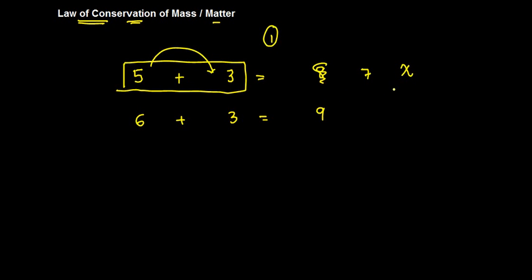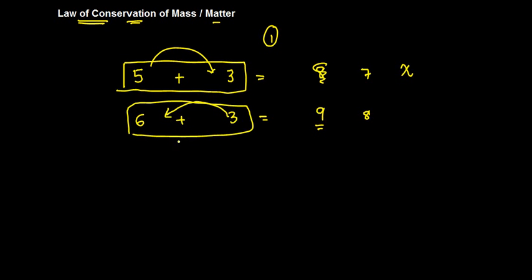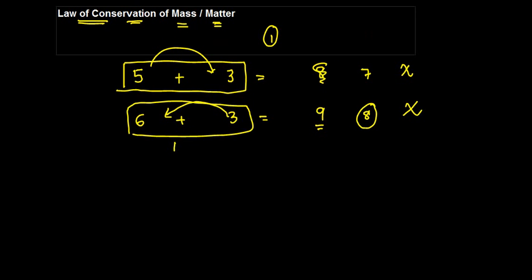That is incorrect. When you add 5 and 3 you get 8. Similarly, when you add 6 and 3 you will always get 9. You cannot get 8 by saying that while I was adding 3 with 6 there was a loss of 1 and therefore what I have reached is 8 — that is incorrect. The law of conservation of mass or matter is something similar, and now I'll tell you why I gave you this example.